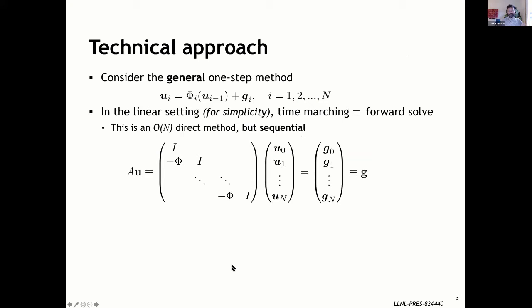For the technical approach and how we do our theoretical derivation, it's highly related to Daniel's talk. We'll be looking at the linear setting — the analysis becomes much more tractable in this case. We consider general one-step methods, so time step i equals phi applied to time step i minus one, and then you have a forcing term G_i.